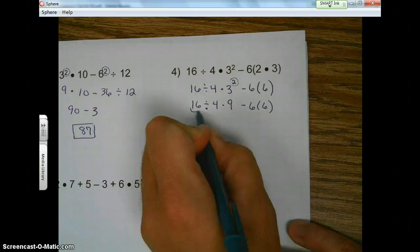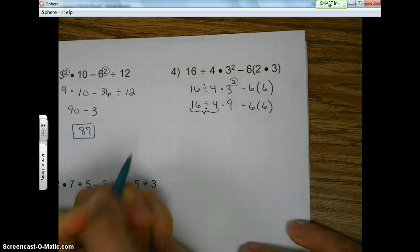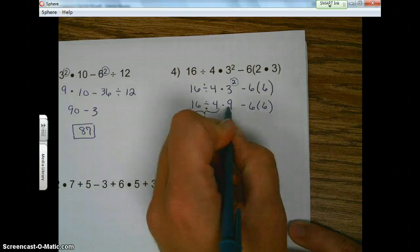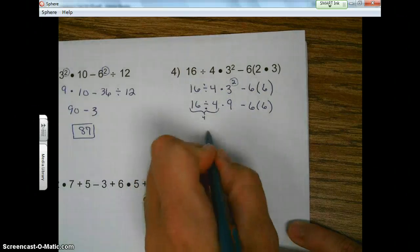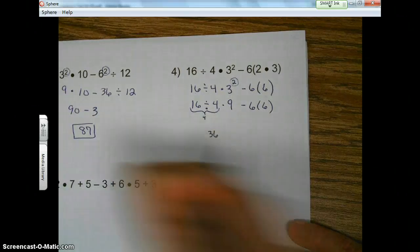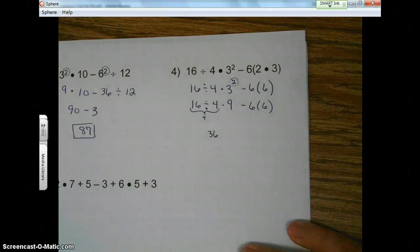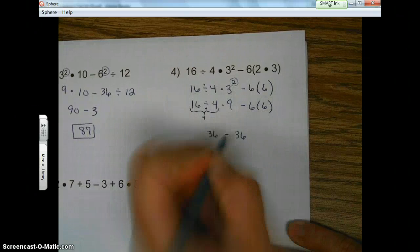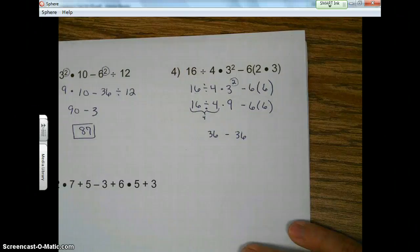So 16 divided by 4 is 4. Here's one of those times where you can kind of, you're in a pre-AP class. You know that's 4. So 4 times 9, 36. You can do a couple steps at the same time. Okay? Minus comes down. 6 times 6 is 36.